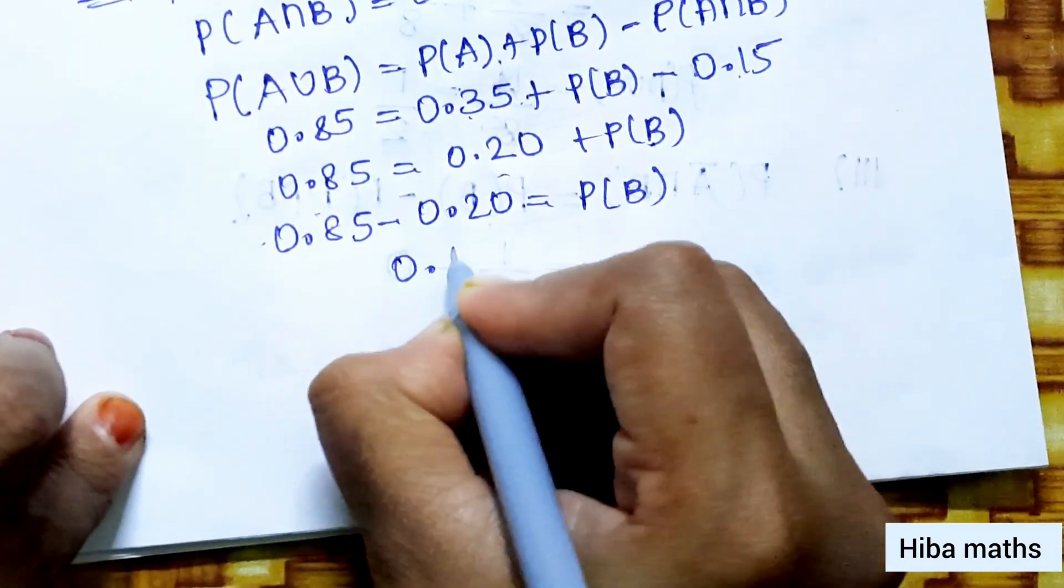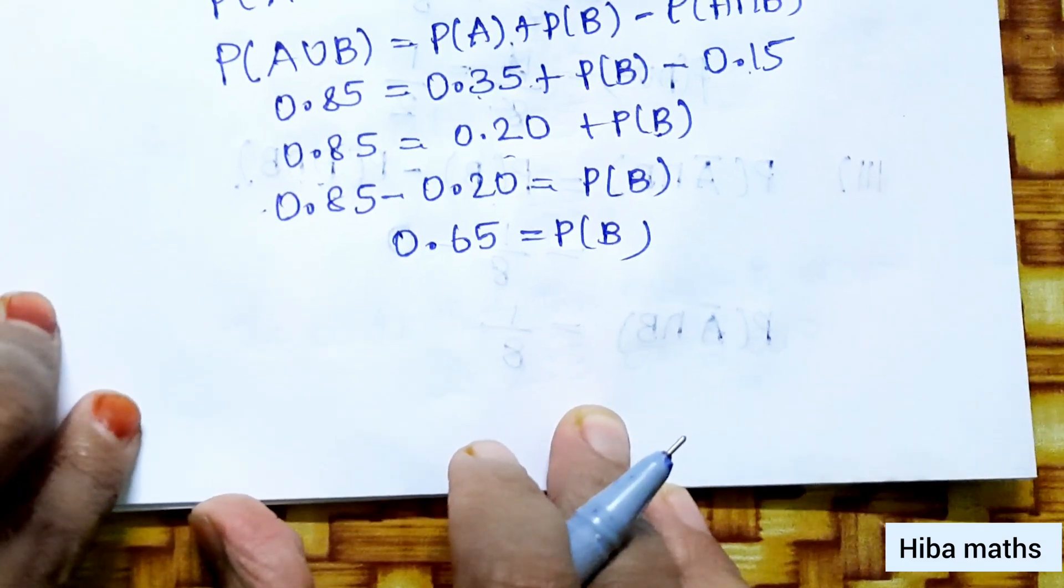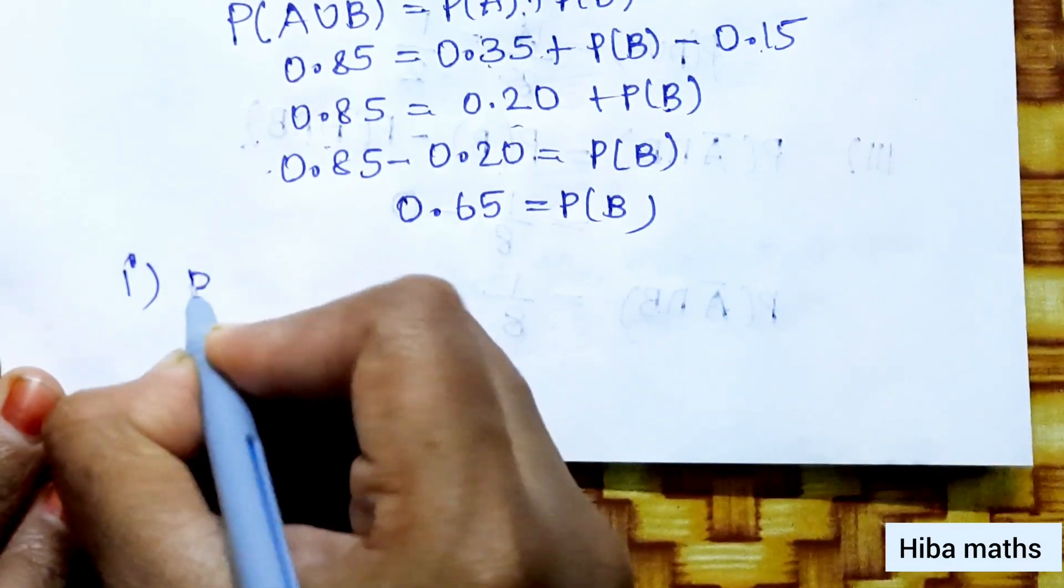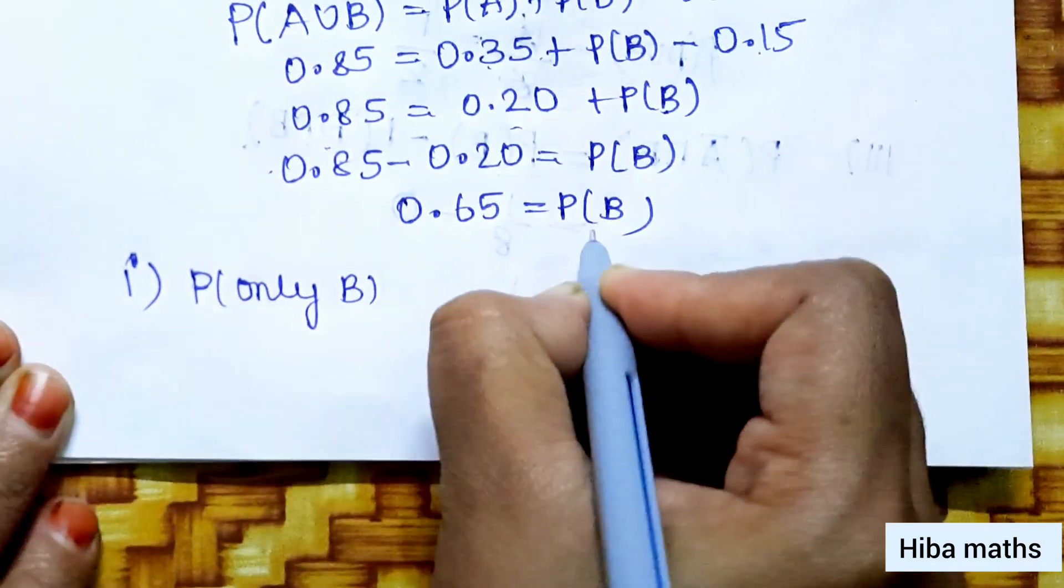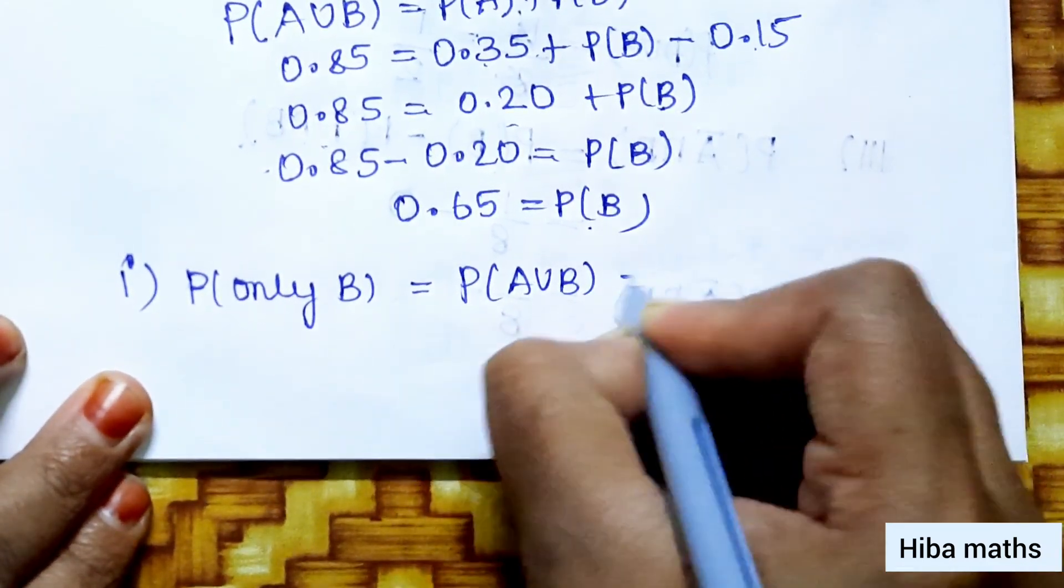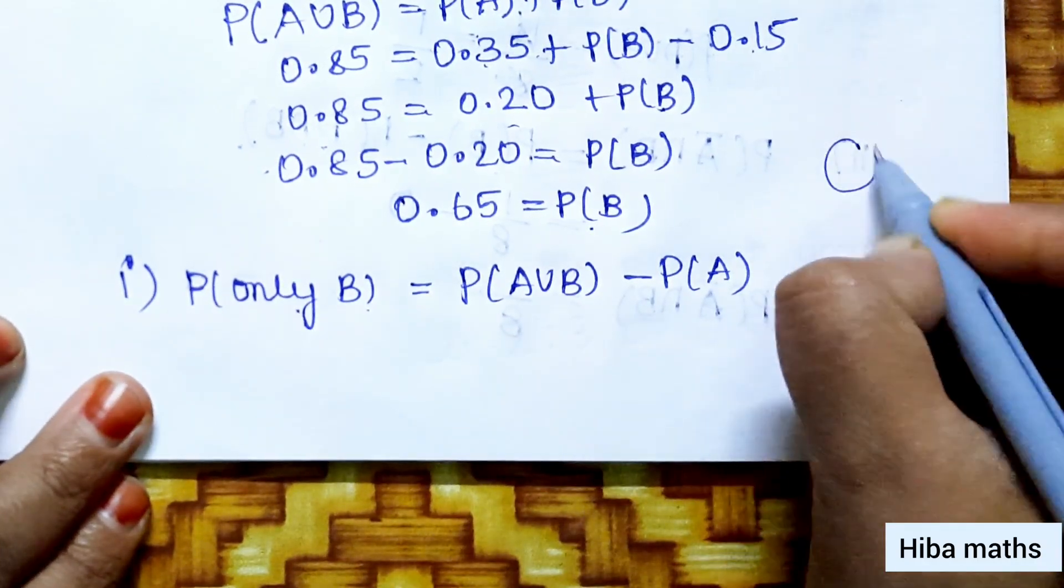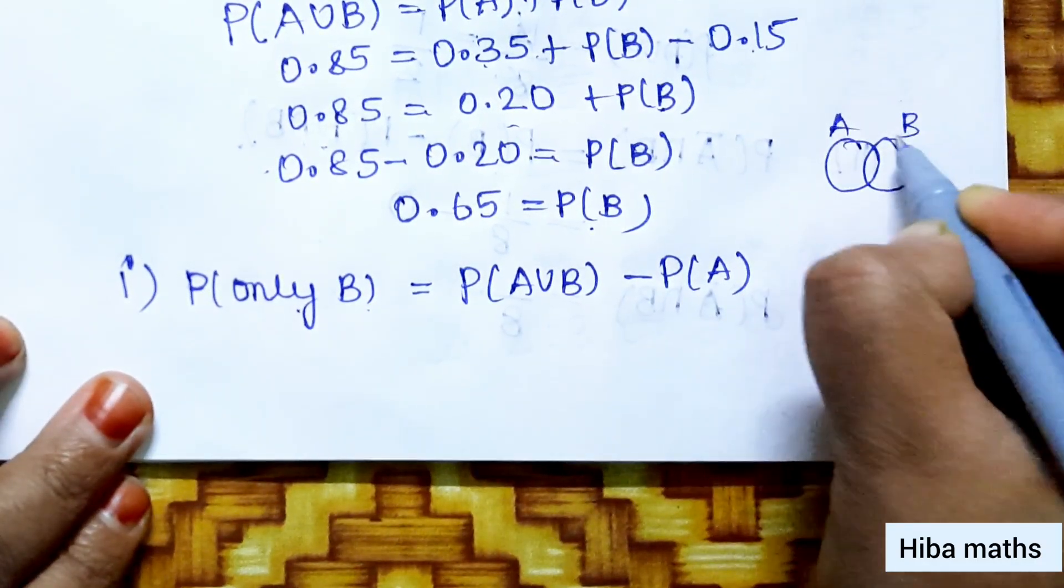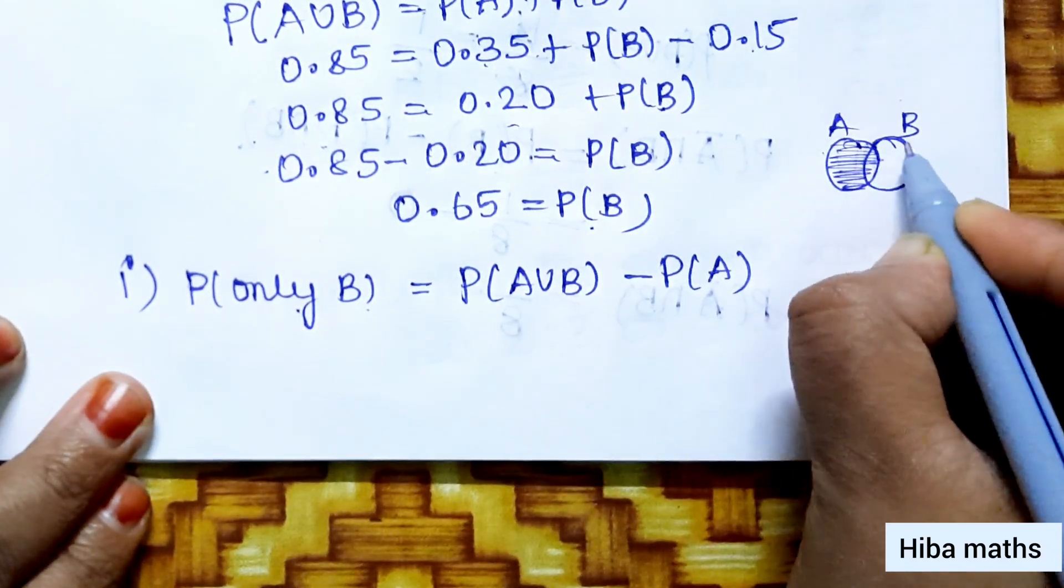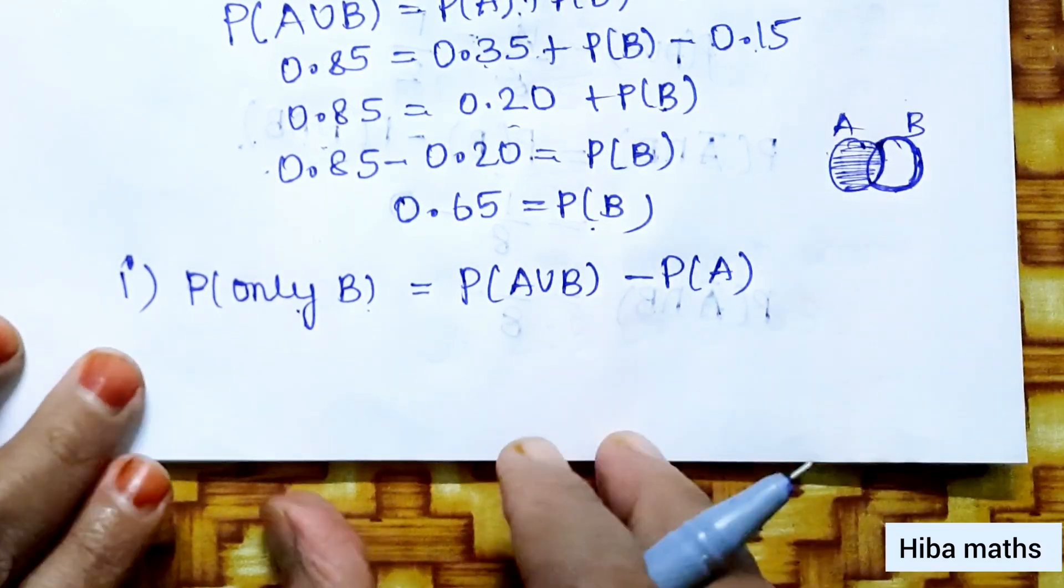Using the formula, 0.85 equals 0.20 plus P(B), so P(B) equals 0.65. First subdivision is P of only B.